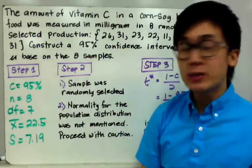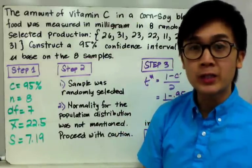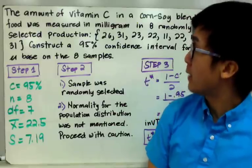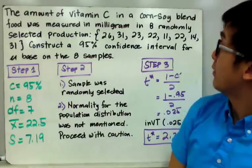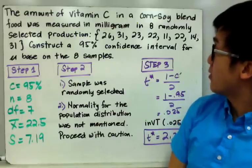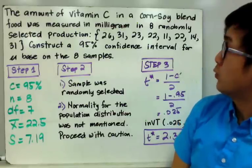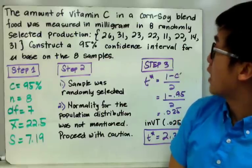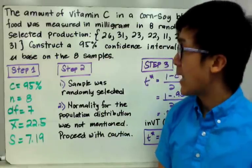Let's use this formula in finding the confidence interval for population mean in this word problem. The amount of vitamin C in a corn-soy blend food was measured in milligrams in 8 randomly selected productions: 26, 31, 23, 22, 11, 22, 14, and 31 milligrams. We will construct a 95% confidence interval for the population mean based on these 8 samples.